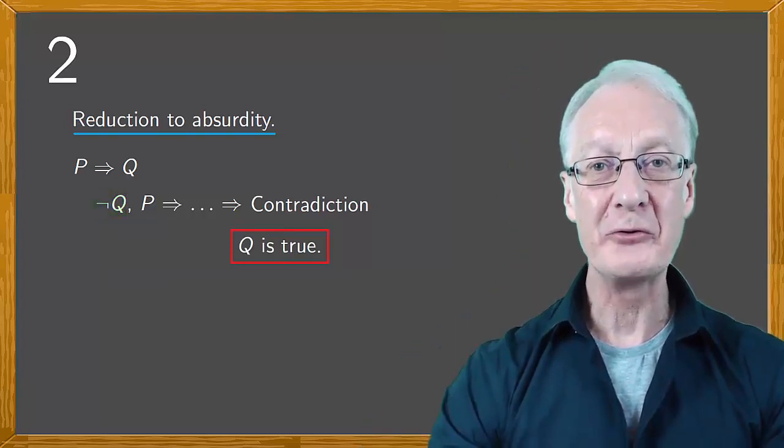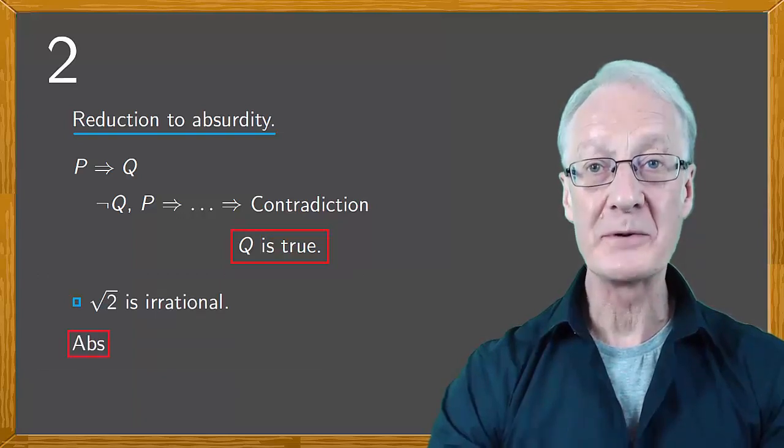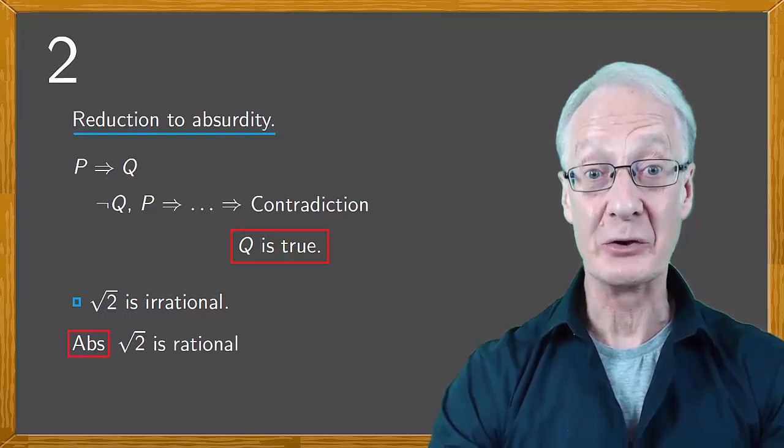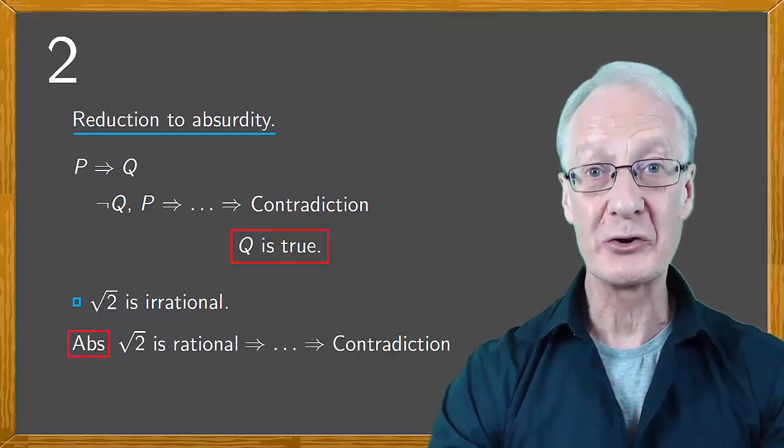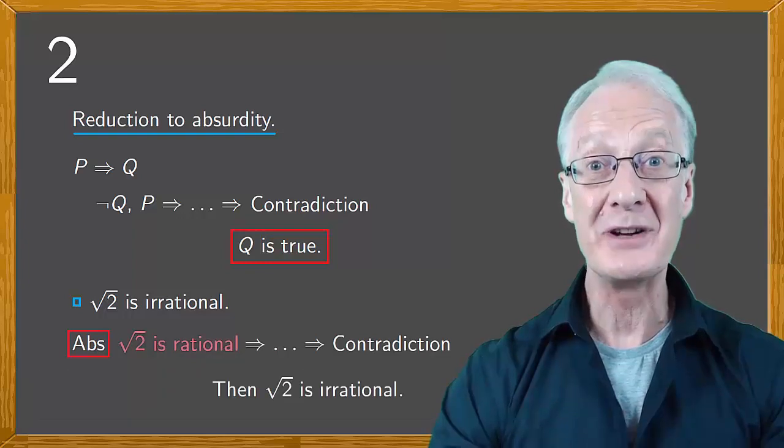An example of proof by reduction to absurdity is the famous demonstration that the square root of 2 is irrational. The opposite is assumed, that root 2 is rational. This then leads to a contradiction, forcing us to the conclusion that root 2 is irrational.